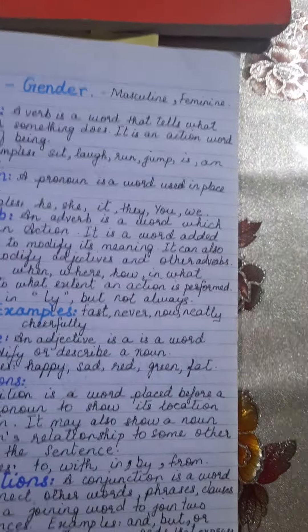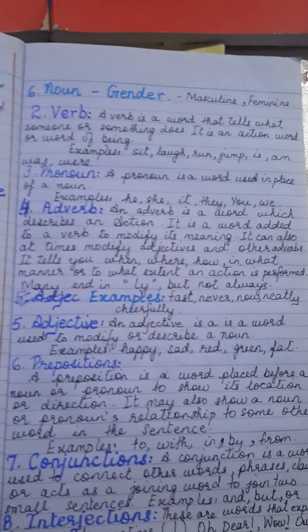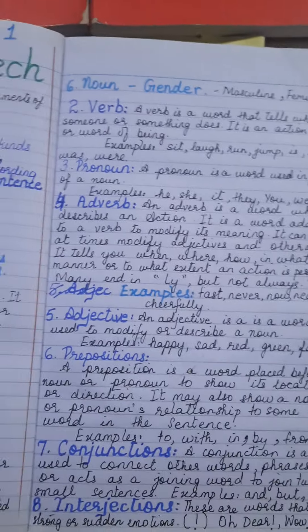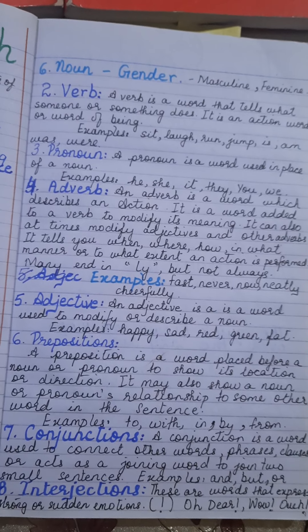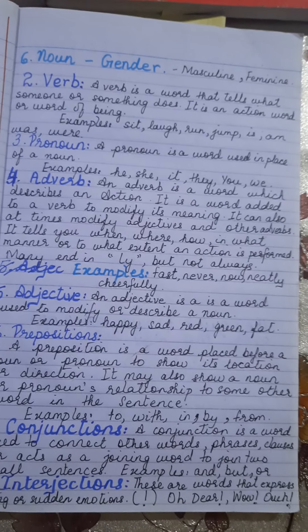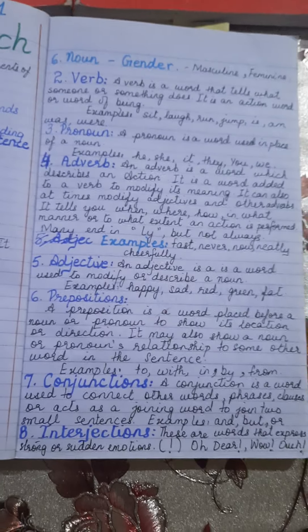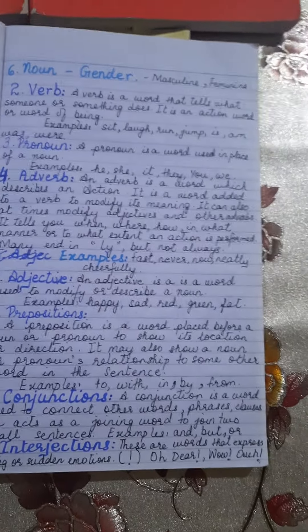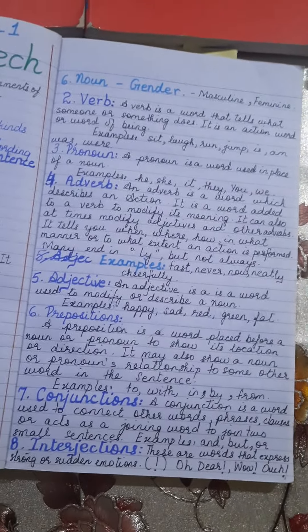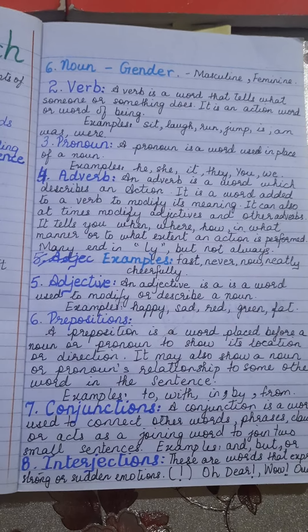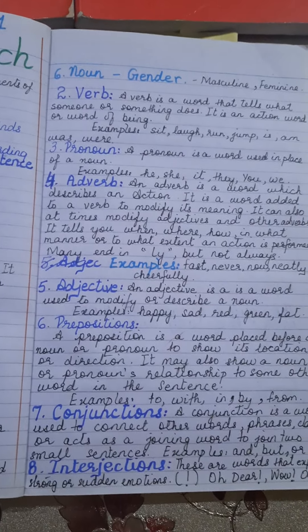Next we move on to noun gender, which is masculine and feminine — boy, girl, man, woman. These names when distributed by gender form are known as masculine and feminine. The second part of parts of speech is verb. A verb is a word that tells what someone or something does; it is an action word or word of being. For example: sit, laugh, run, jump, is, am, was, were. Whenever an action is going on and the word describes that action, it is known as a verb. The verb of being is also important and is known as a helping verb or auxiliary verb. For example: 'I am a teacher' — here 'am' is the auxiliary verb explaining my being, and the action I do is teach.